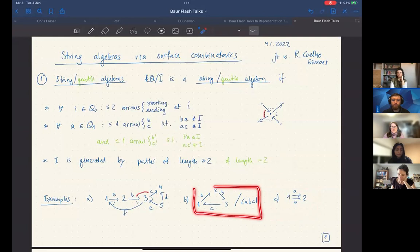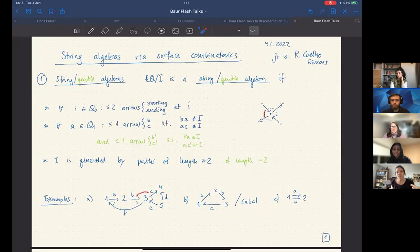Example B is not a gentle algebra because the relations that you get are not generated in length two. So here we have a three cycle and we need three arrows to make a relation.